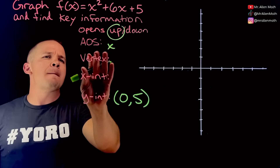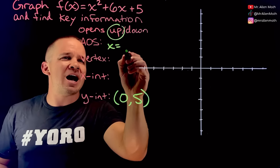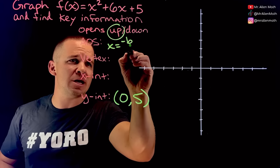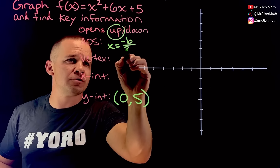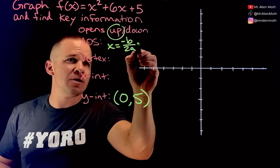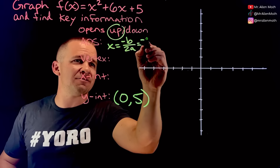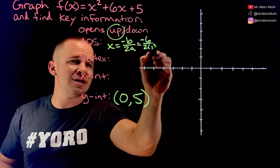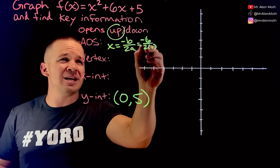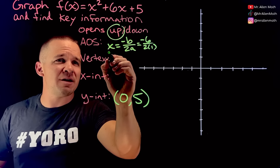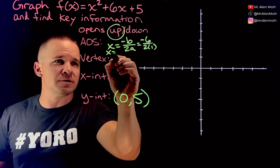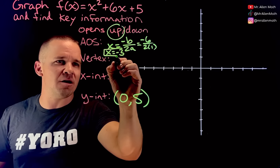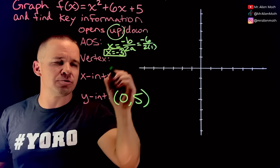Back to the axis of symmetry — I need to use this formula: opposite of b over 2a. When I do that, opposite of b is negative six, over two times one. That's negative six divided by two, so I'm going to have x equals negative three. That's my axis of symmetry.